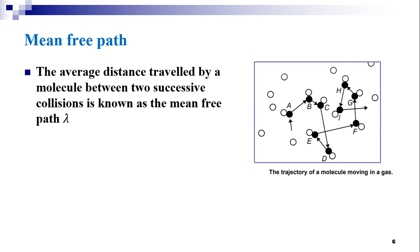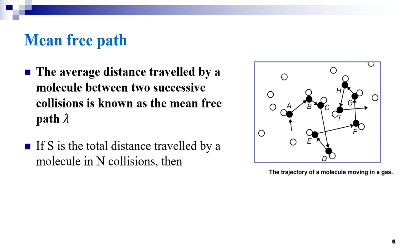Mean free path is defined as the average distance travelled by a molecule between two successive collisions, and it is denoted by the symbol lambda. If lambda 1, lambda 2, lambda 3, etc., up to lambda n are the successive free paths travelled by the molecule in time t, and n denotes the total number of collisions suffered in this period, then lambda is equal to the sum of all free paths divided by n. That means the mean free path equals the ratio of total distance travelled to total number of collisions. If s is the total distance travelled in n collisions, then lambda equals s by n.